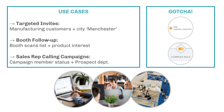One gotcha I will stress: the first time I went in to create a complex rule step I was baffled because I couldn't find it. This is because it's just a normal rule step — once you press 'Add Condition,' that's when it converts into a complex rule step. So just be aware that you first create a regular rule step and then transform it into a complex rule step.